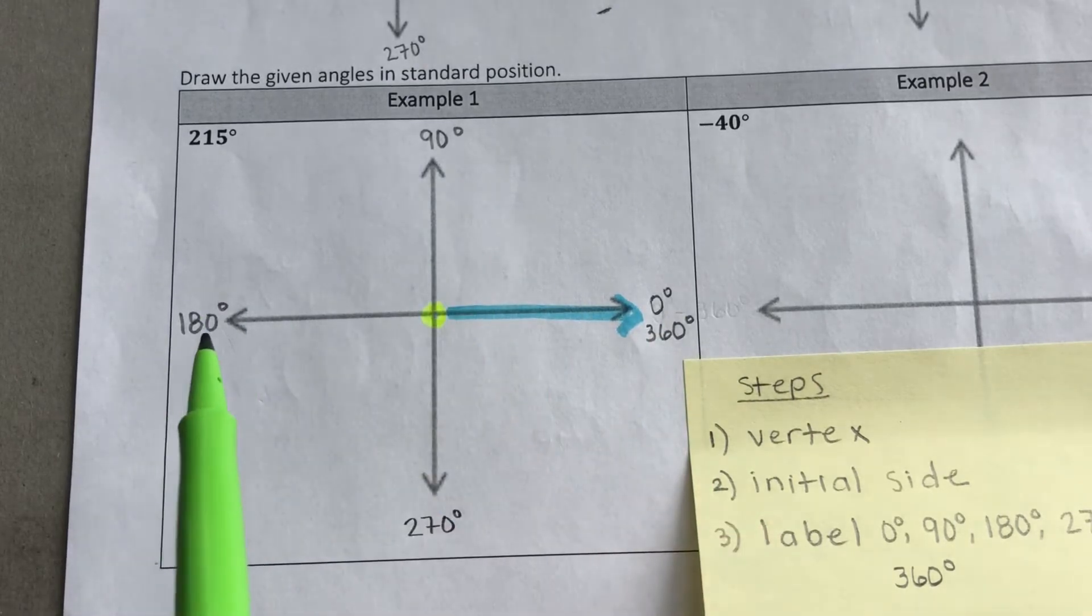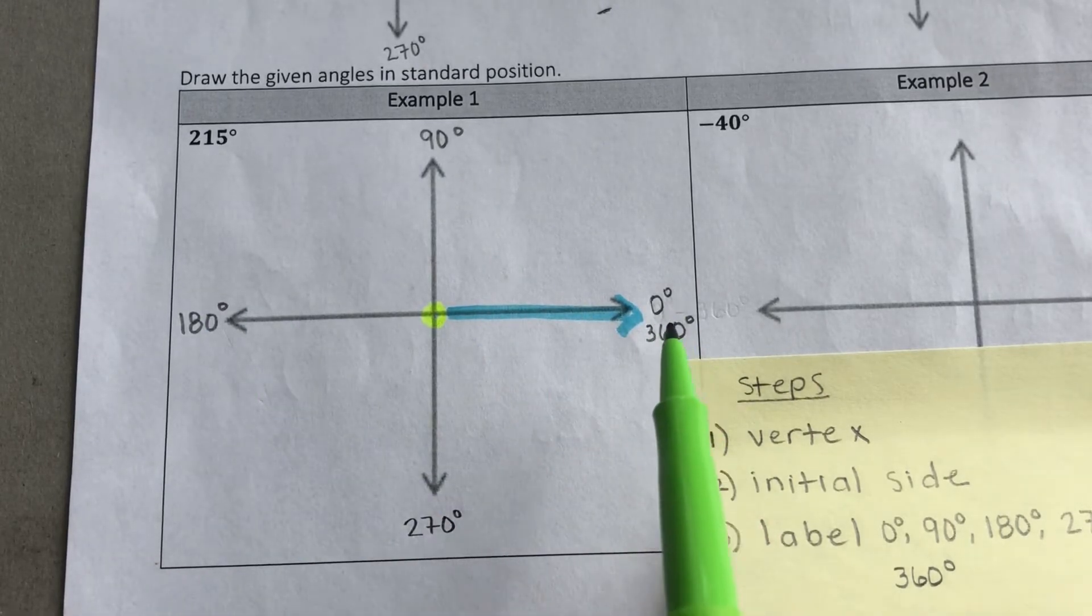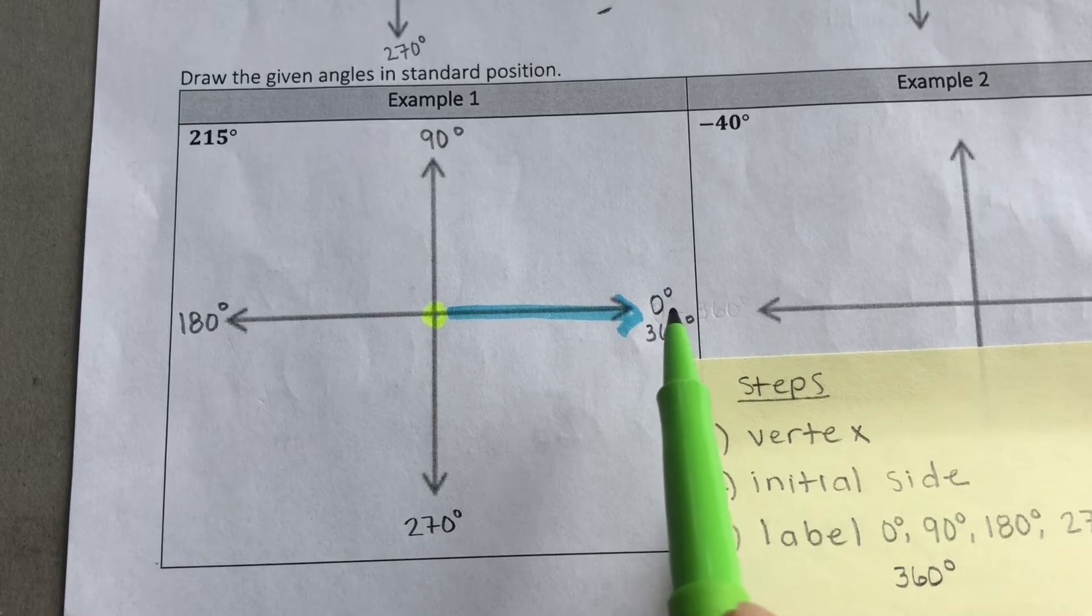0, 90, 180, 270, and 360 takes us back to where we started.